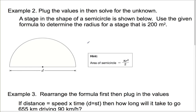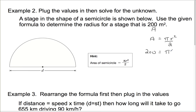Moving on to the next slide. Example 2: plug the values in and then solve for an unknown, so we don't have to rearrange the equation first. In this particular example, a stage in the shape of a semicircle is shown. Use the given formula to determine the radius for a stage that is 200 square meters. So what we're given here is the area. The formula is: area of a semicircle equals pi r squared divided by 2.